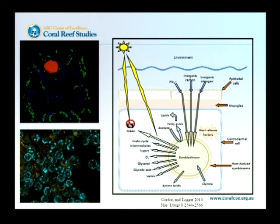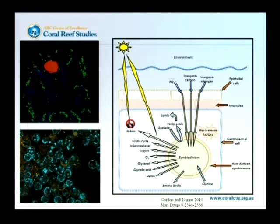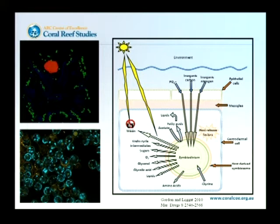The problem is that when we want to look at the response of symbiodinium or zooxanthellae in a coral symbiosis, we don't really have a lot of tools we can use to see how they're responding. We can do something like C14 tracing and look at how much carbon is being moved from one step to another, or look at photosynthesis and see how much oxygen is being produced. But it's very difficult to get a handle on what actually is the response of symbiodinium to a variety of stresses.